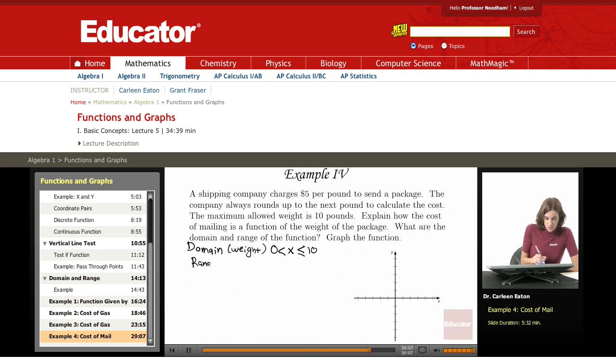The range is going to be the cost of mailing. And the range is going to be different. The range is actually going to be discrete numbers because they're saying here that they always round up to the next pound to calculate the cost. So if I have a package that's 2.5 pounds, they're going to round up to 3 and charge me $15.